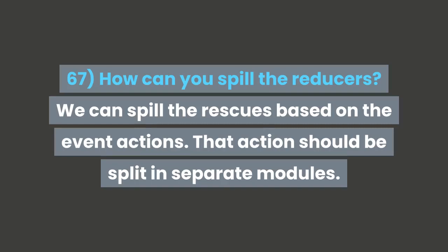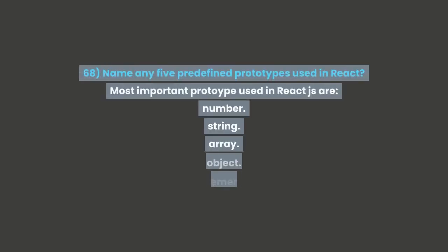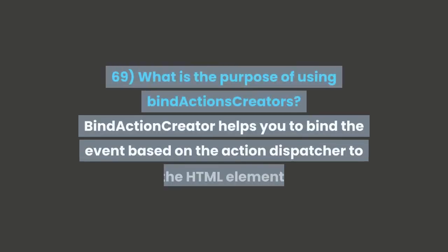Question 68: Name any five predefined prop types used in React. The most important prop types used in React are: number, string, array, object, and element. Question 69: What is the purpose of using bindActionCreators? bindActionCreators helps you to bind the event based on the action dispatcher to the HTML element.